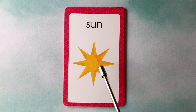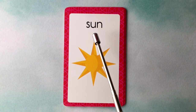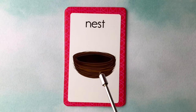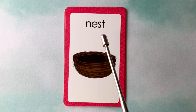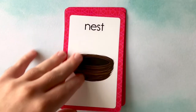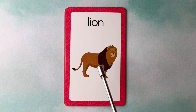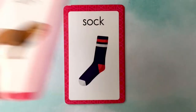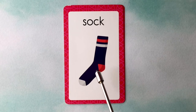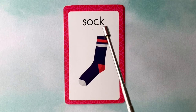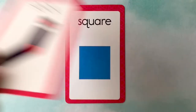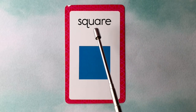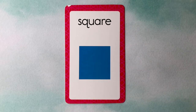This is a sun: S-U-N. Sun. This is a nest: N-E-S-T. Nest. This is a lion: L-I-O-N. Lion. This is a sock: S-O-C-K. Sock. This is a square: S-Q-U-A-R-E. Square. Great job.